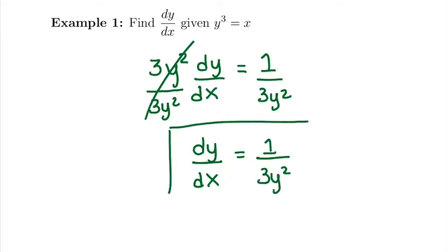There's our derivative. Now that we're doing implicit differentiation, our derivatives can have both x's and y's in them. This one is 1 over 3y squared.